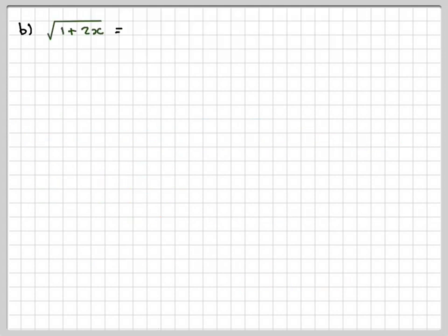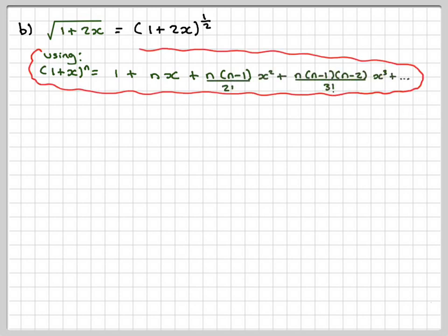If we want to do the next one, which says the square root of 1 plus 2x, we rewrite that in brackets as (1 + 2x)^(1/2). Then using our rule, (1 + x)^n equals this. We're going to have that n equals a half, and x is equivalent to 2x this time.